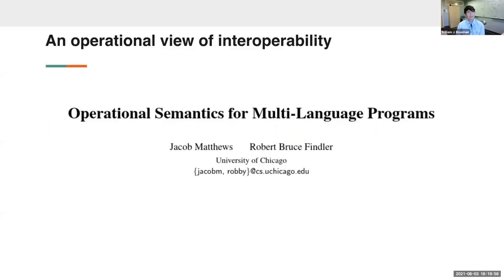There are several techniques in the literature for modeling this kind of interoperability. The one I'm going to focus on is the paper by Matthews and Findler on operational semantics for multi-language programs. This paper is focused not on compilation but purely on interoperability: how do you model a Scheme-like language and an ML-like language such that values can flow between them and you get a sensible semantics? It's a very operational view, unlike more semantic approaches using sets or categories.